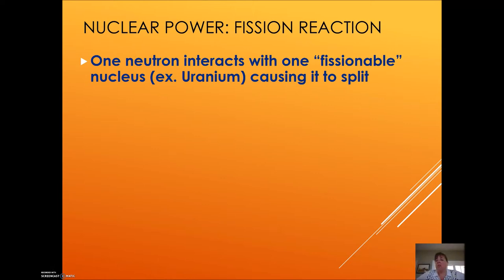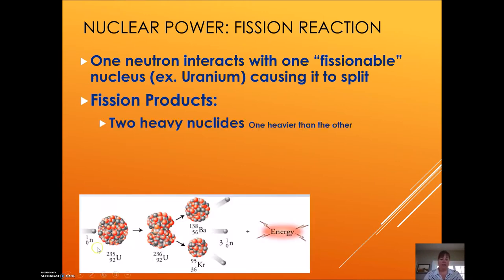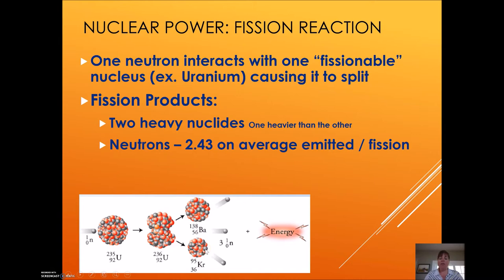You need to know the difference between a fission reaction and a fusion reaction. Fission, we're splitting apart. A neutron will interact with a fissionable nucleus — uranium is a good example — causing it to split. We hit it with a neutron and we split into two heavy nuclei. One product is two heavy nuclei; one is actually always heavier than the other. So here's barium and krypton. I also produce a bunch of neutrons, and the average is 2.43 neutrons per reaction.